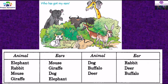The rabbit is having the ear of a giraffe, and the mouse is having the ear of a dog. The giraffe is having the ear of an elephant. The dog is having the ear of a rabbit. The buffalo is having the ear of a deer, and the deer is having the ear of a buffalo. So this is the first activity. We will move to the next one.